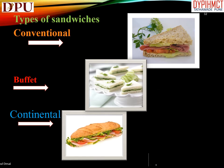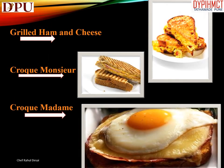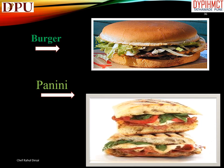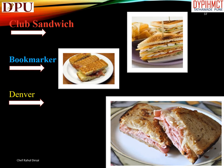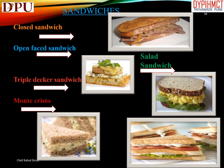Summary of sandwich types covered: conventional, buffet, continental, open-faced, rolled, pinwheel, ribbon, grilled ham and cheese, croque monsieur, croque madame, steamer, max, hot dog, gyro, burger, panini, club sandwich, bookmaker, Denver, western sandwich, Danish hot tartar, closed sandwich, open-faced sandwich, triple-decker sandwich, Monte Cristo, and salad sandwich.